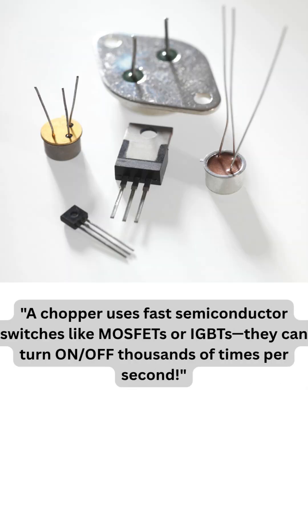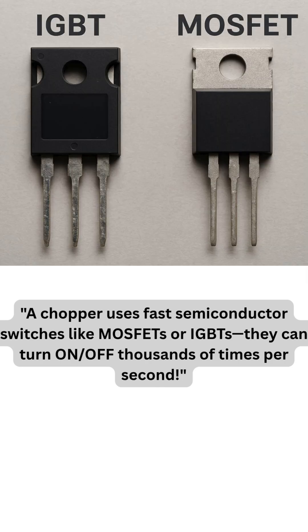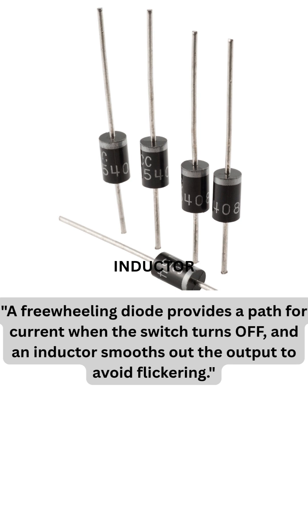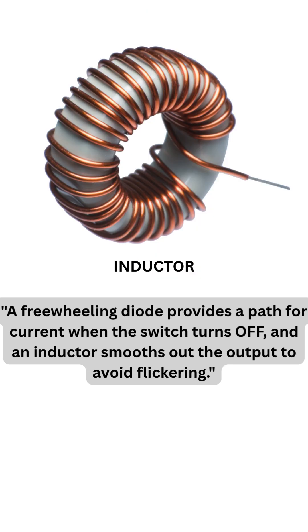A chopper uses fast semiconductor switches like MOSFETs or IGBTs. They can turn on and off thousands of times per second. A freewheeling diode provides a path for current when the switch turns off, and an inductor smooths out the output to avoid flickering.